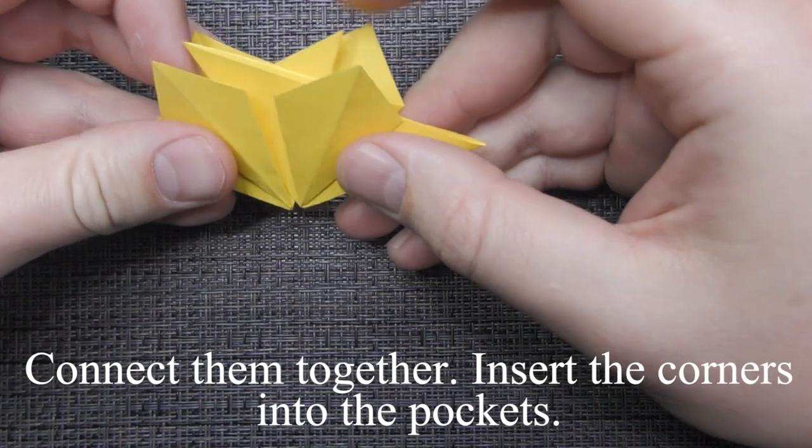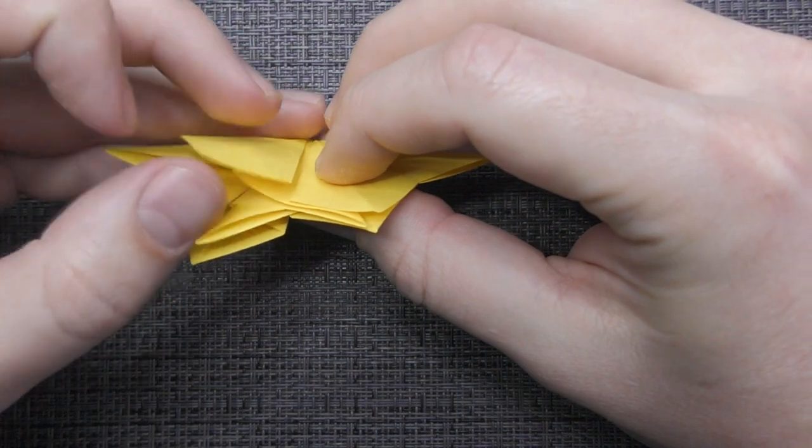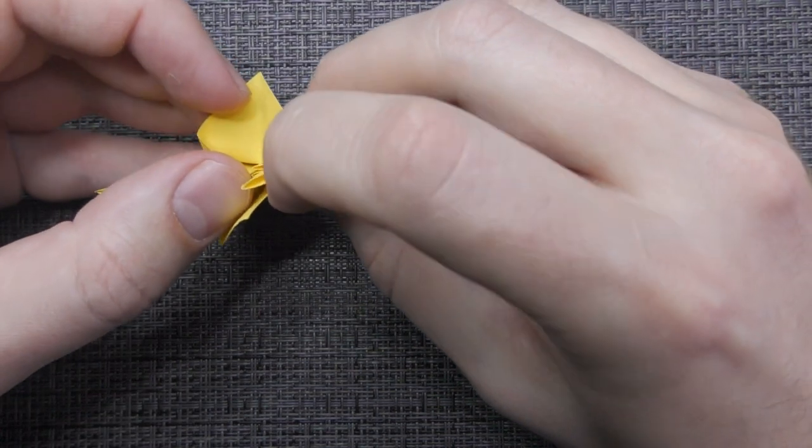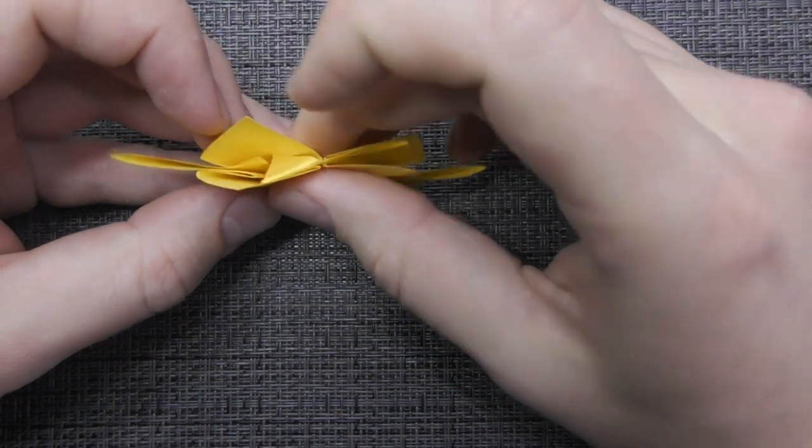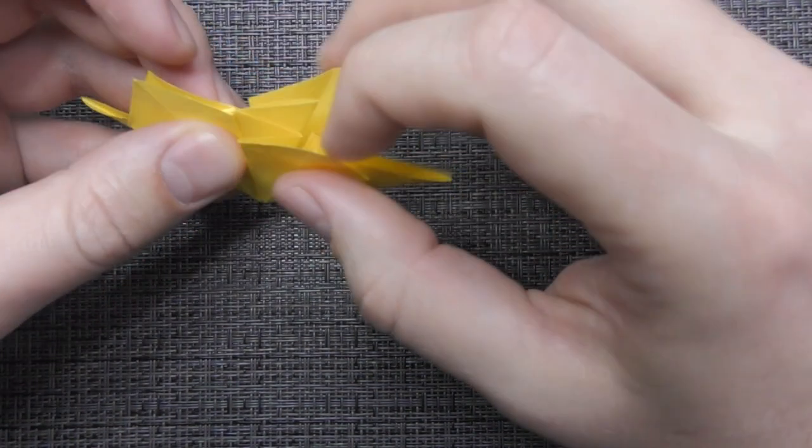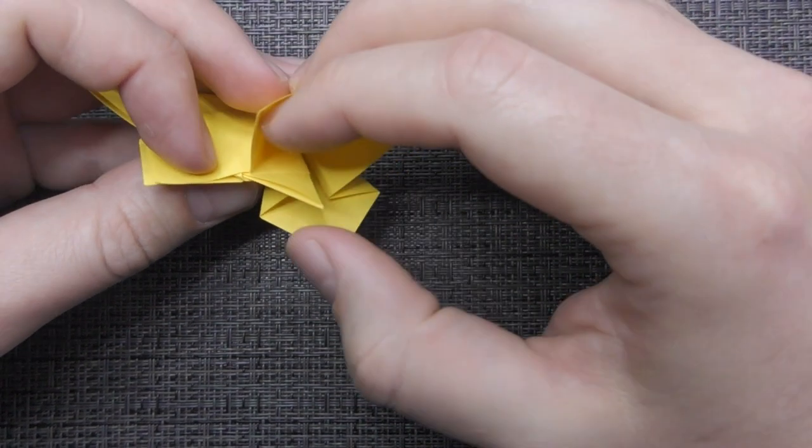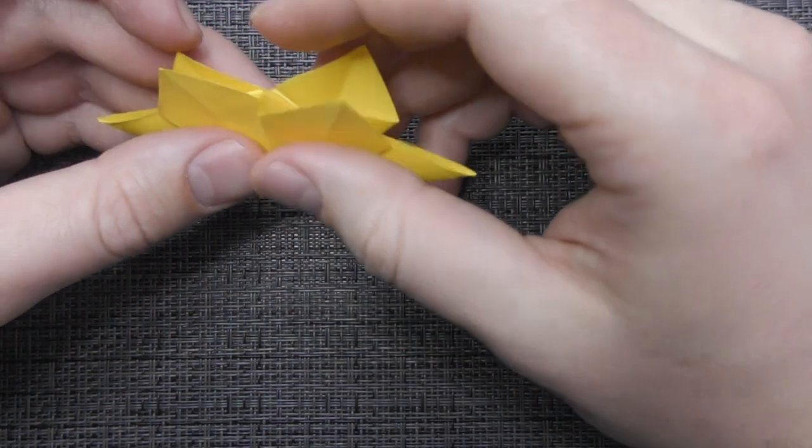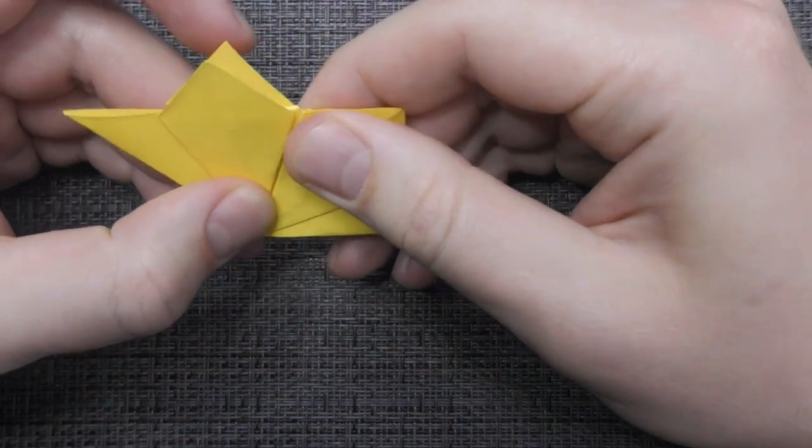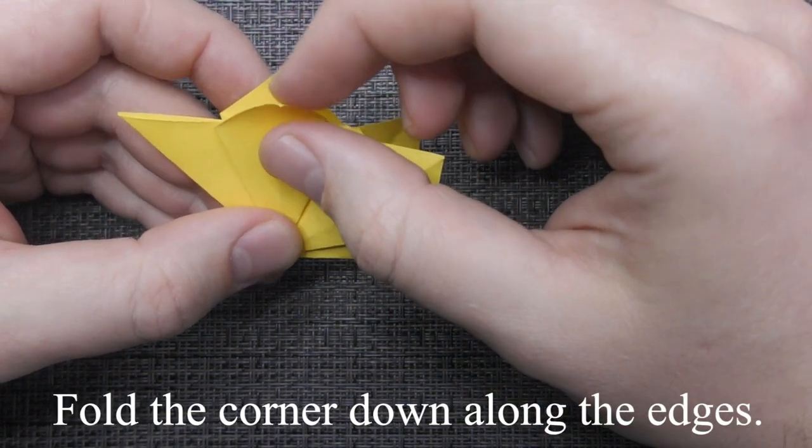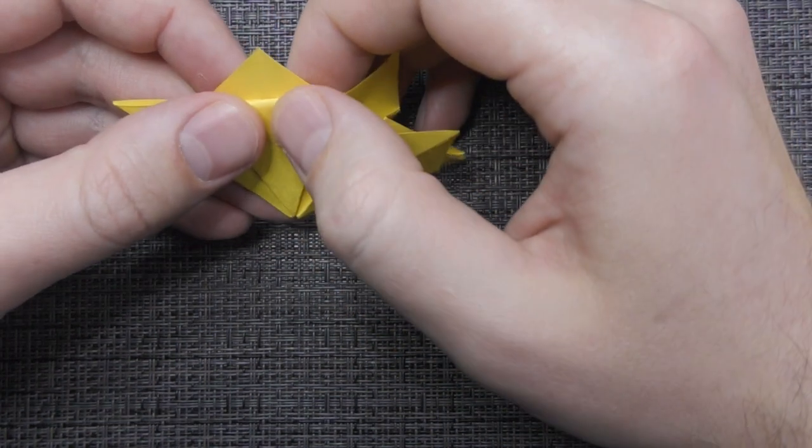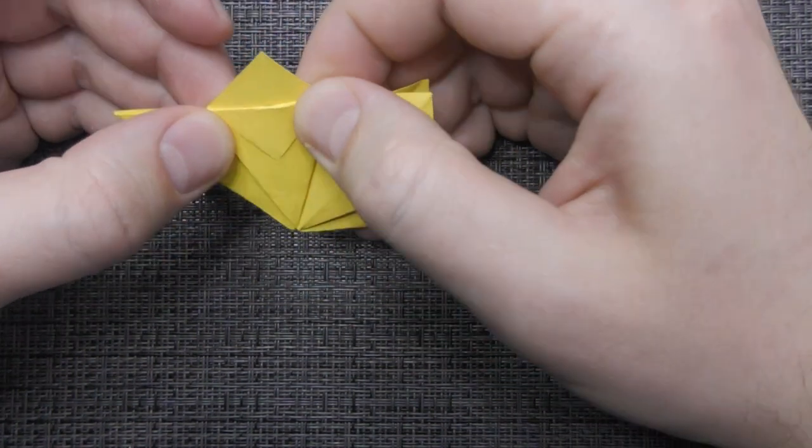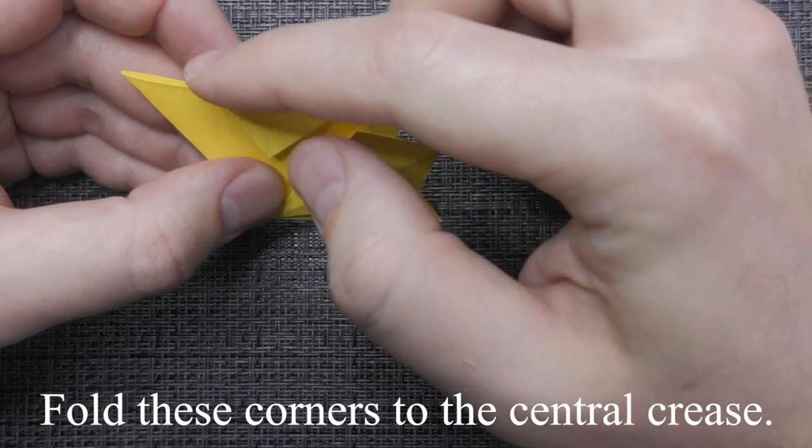Connect them together. Insert the corners into the pockets. Fold the corners. Insert the corner down along the edges. Fold these corners to the central crease.